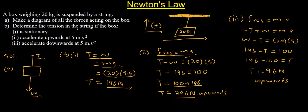The last question: tension when the box accelerates downwards at 5 meters per second squared. If it accelerates downwards, tension becomes negative and weight becomes positive, giving: weight minus tension equals ma. So 196 minus T equals 100. We transpose T to the right hand side and 100 to the left: 196 minus 100 equals 96 newtons, which is our tension acting upwards.